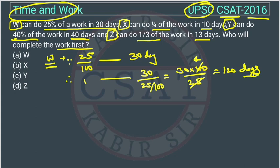Otherwise, you can do it directly because 25% work is completed in 30 days. So 100% will be in how many days? 4 times here, so it will be 4 times here. So it will be 120 only.